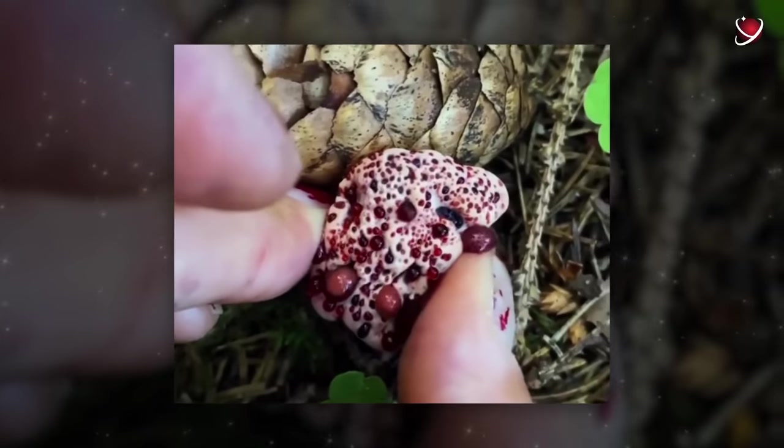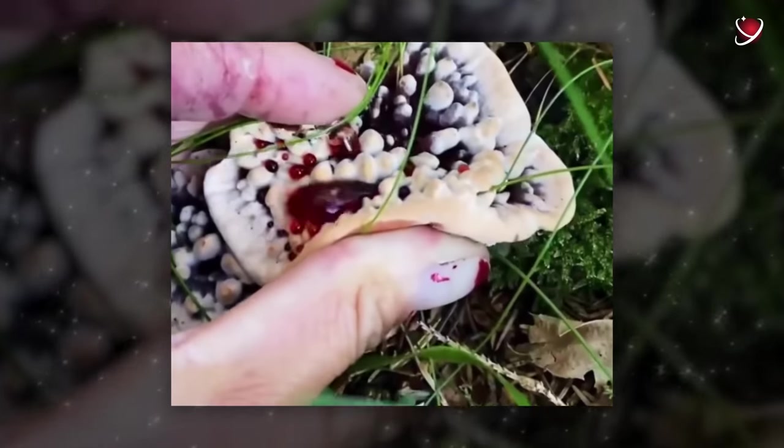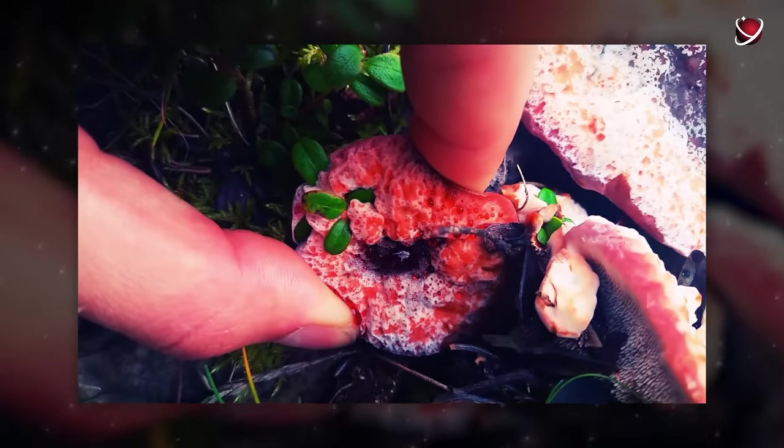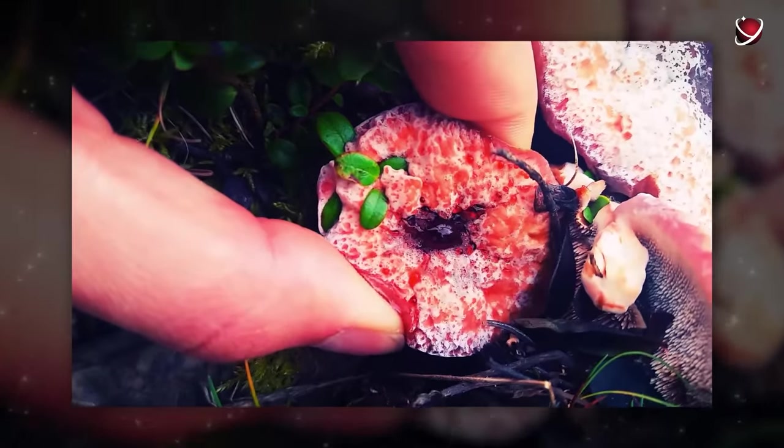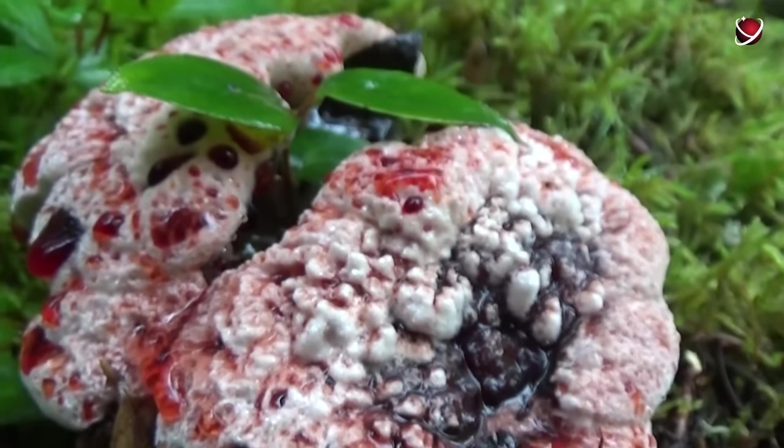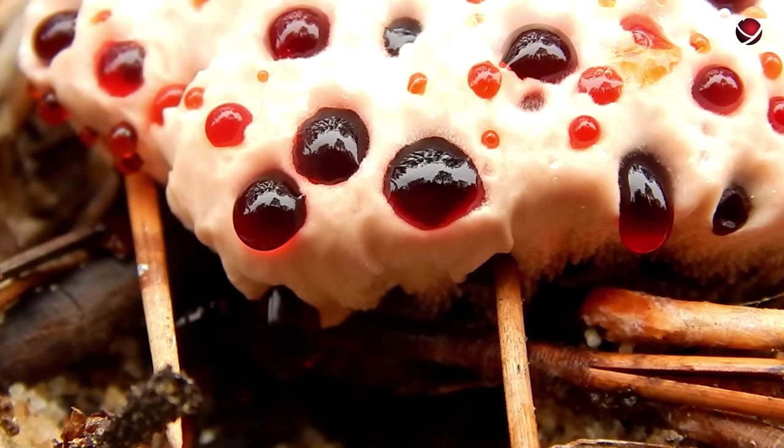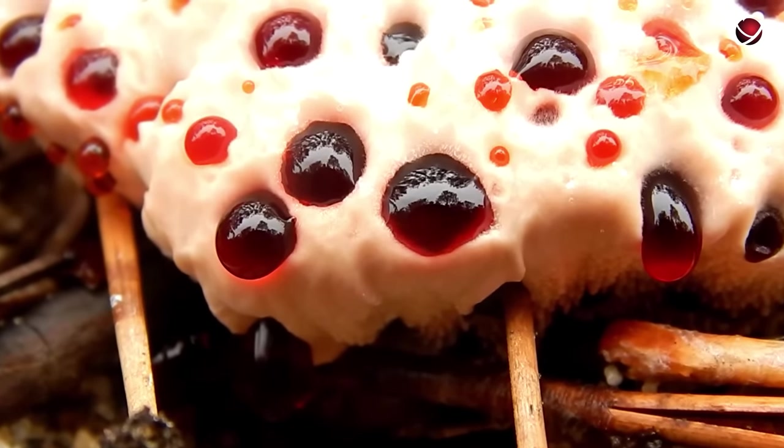It can be found in the fall in the coniferous forests of North America, the Pacific Northwest, Europe, Iran, and Korea. In the United States, its range extends as far north as Alaska, and as far east as North Carolina. In the Puget Sound region of Washington state, it commonly accompanies Douglas fir, silver fir, and hemlock. Along the Oregon coast, it is spotted under pine trees.